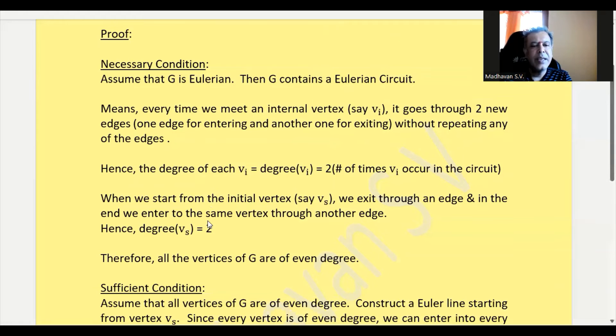When we start from the initial vertex, say vs, we exit through an edge and in the end we enter the same vertex through another edge. Hence, the degree of that start vertex is also 2.